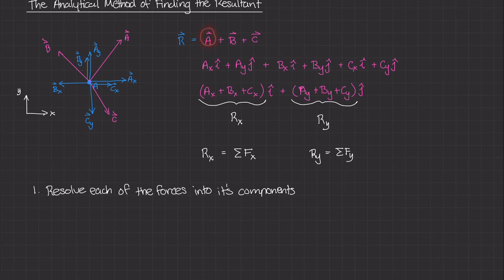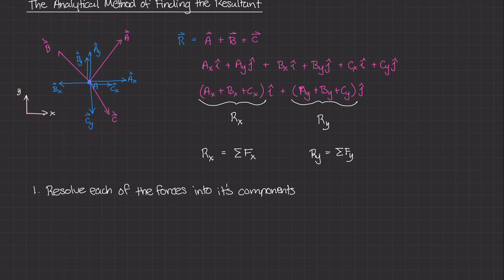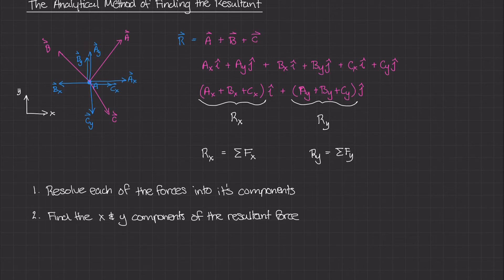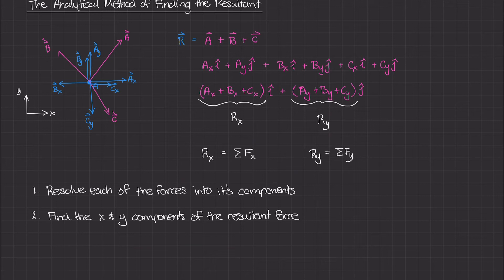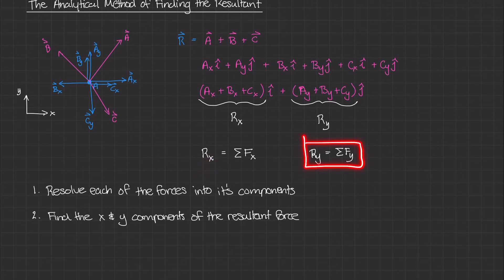This analytical method really has three different steps to figure out what the resultant force is. The first step is to resolve each of the forces into its components — we did that graphically on the diagram as well as analytically. Each force A, B, and C had an X component and a Y component. Step two is to find the X and Y components of the resultant force: once we have all the components, we sum all the forces in the X direction to get RX, and do the same for the Y direction to get RY.